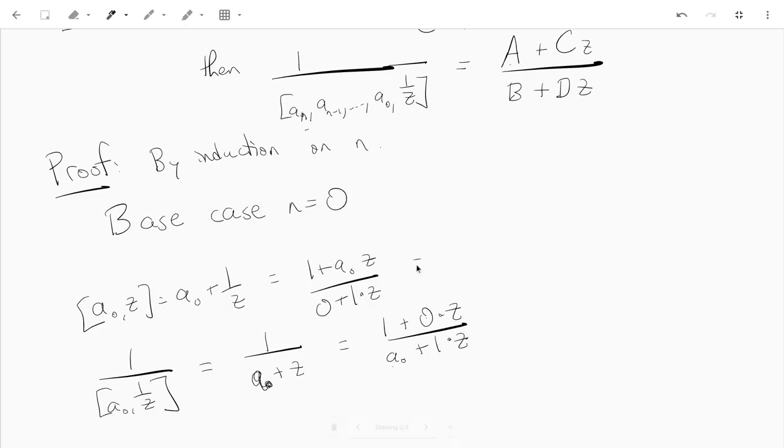This kind of verifies the theorem. So if I write this as a plus bz over c plus dz, so a is 1, b is a0, c is 0, d is 1, and this is a plus cz over b plus dz. So when I do 1 over a0, 1 over z, I get the transpose, c and b have switched. That completes the base case.